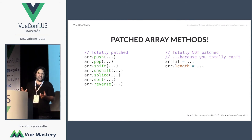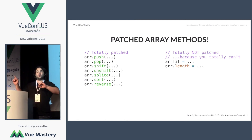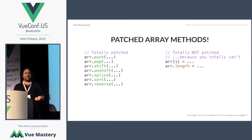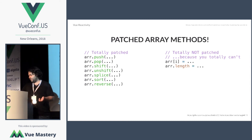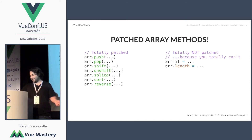But there are a couple of things that totally aren't patched because they can't be — at least until the next version of Vue. If you set an array index or if you set the length, those can't be tracked. But again, I take this as an opportunity to say thank you for patching my array methods — that's really helpful.